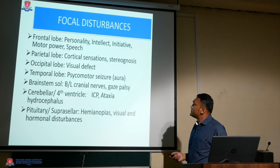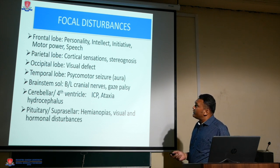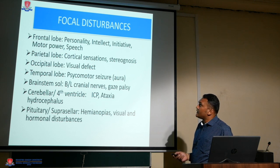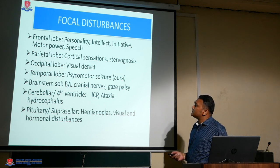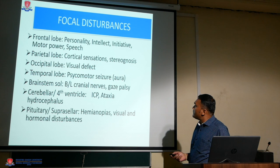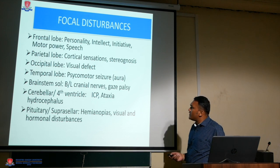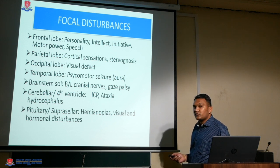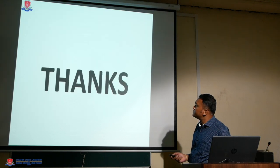Focal disturbances depend upon the area involved. Frontal lobe involvement causes personality deficit, intellectual deficit, inactivity, and motor speech deficit. Parietal lobe involvement causes cortical sensation and stereognosis deficits. Occipital lobe involvement causes visual defects. Temporal lobe causes psychomotor seizures. Brain stem involvement causes bilateral cranial nerve and gaze palsy. Cerebellar and fourth ventricle involvement causes raised intracranial pressure, ataxia, and hydrocephalus. Pituitary or suprasellar tumors cause hemianopia, visual disturbances, and hormonal disturbances.